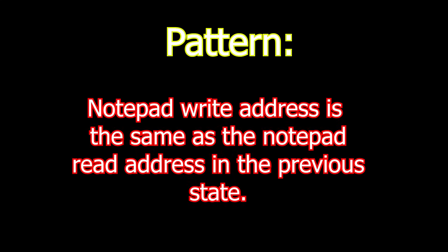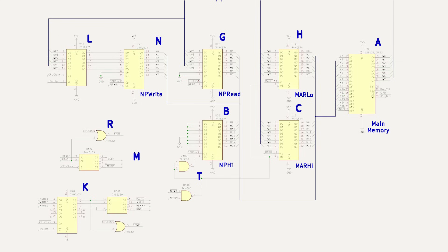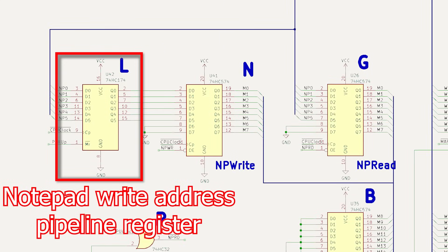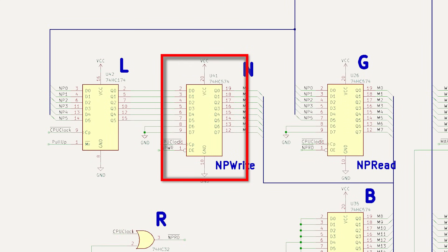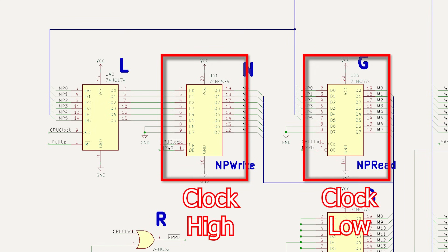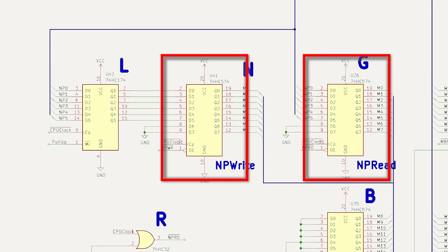If you look carefully, you'll spot a pattern. The notepad write register in one state is always the notepad read register from the previous state. That means we don't need to store both. What we need is one register to store the data, and one register to hold the notepad write address. Then, we apply both in the following state. It's a subtle change, but it transforms how the machine flows.